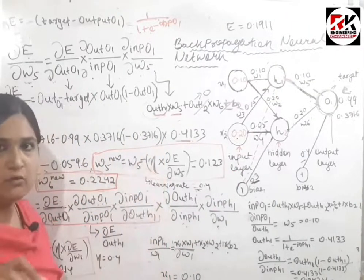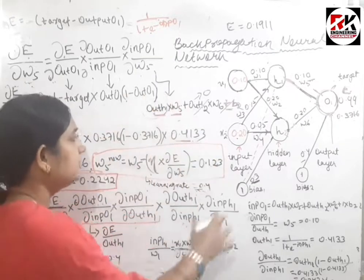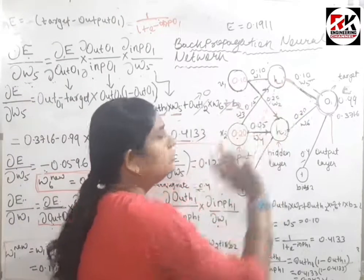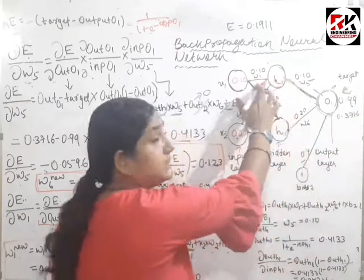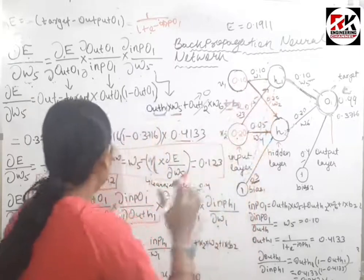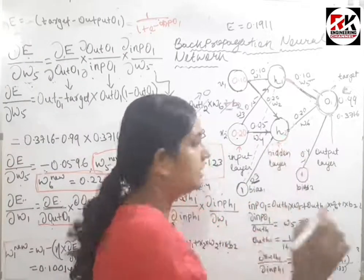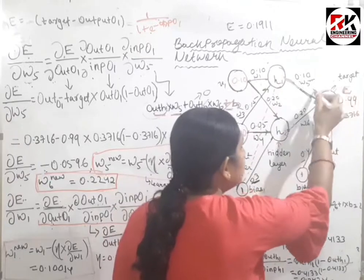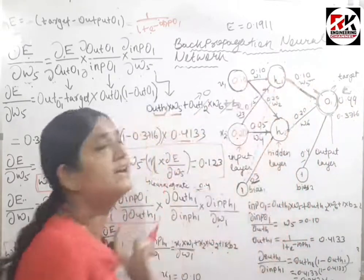I will explain why we multiply by the learning rate at the end of the session. Similarly you can calculate w6. Now let's move to w1, w2, w3, w4. For w1, we apply the chain rule: error with respect to w1. The path is: error → output(o1) → input(o1) → output(h1) → input(h1) → w1.